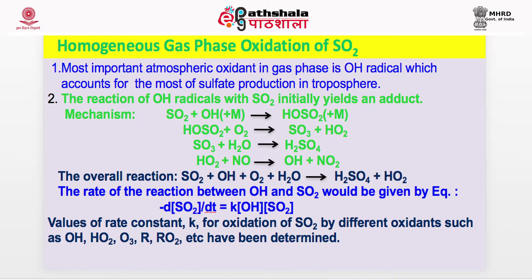SO2 reacts with hydroxyl radicals in the presence of a third body M to form an intermediate HOSO2. The purpose of the third body is to remove the extra energy released; otherwise HOSO2 would be in an excited state and decompose back to SO2 and OH. This intermediate reacts with O2 to form SO3. Sulfur trioxide then rapidly reacts with water to form H2SO4. The hydroperoxyl radical HO2 reacts with NO to regenerate OH and form NO2. So OH acts both as an oxidant and a catalyst. The overall reaction can be written as: SO2 + OH + O2 + H2O → H2SO4 + HO2.